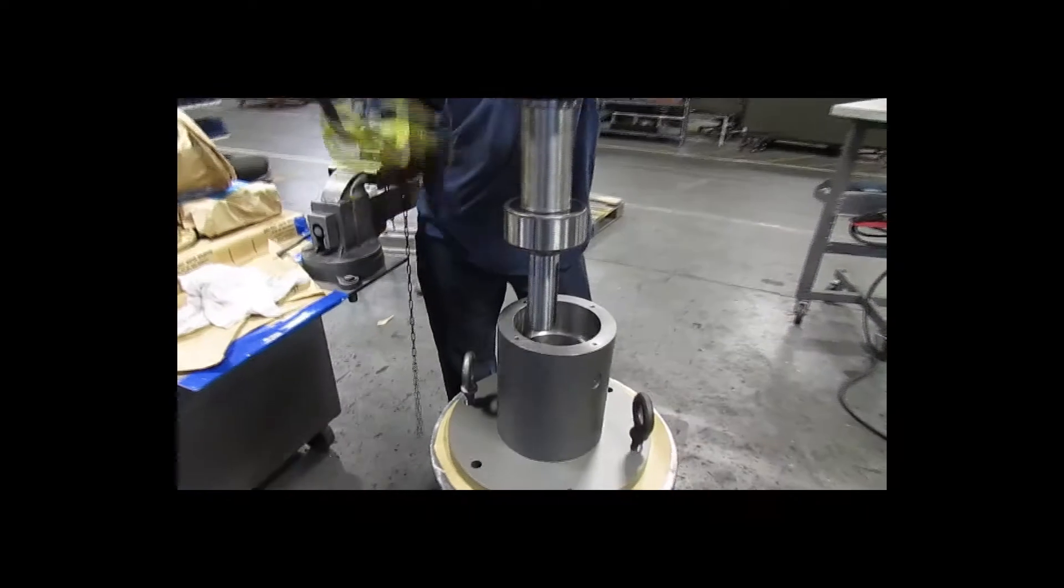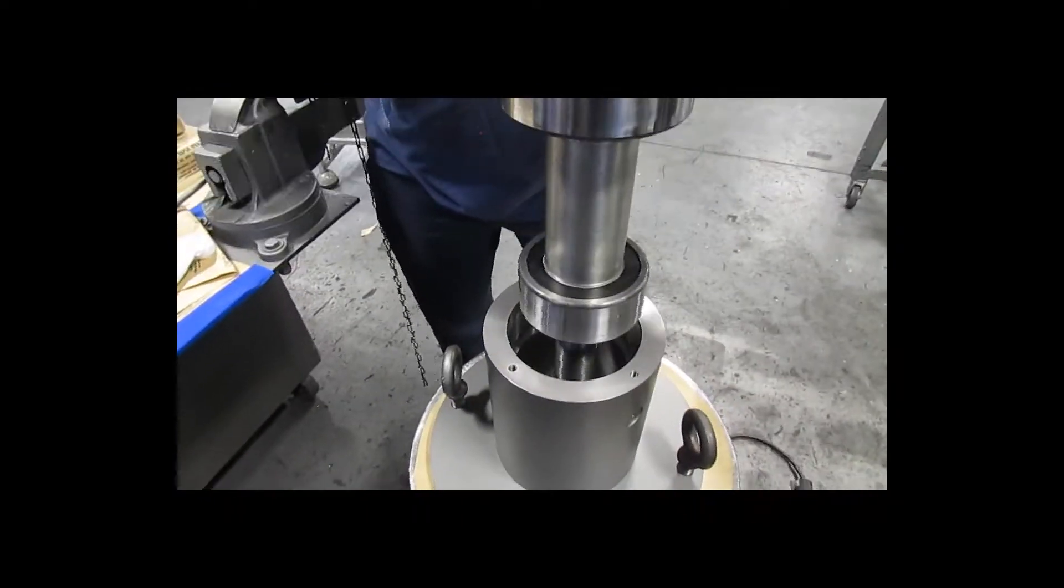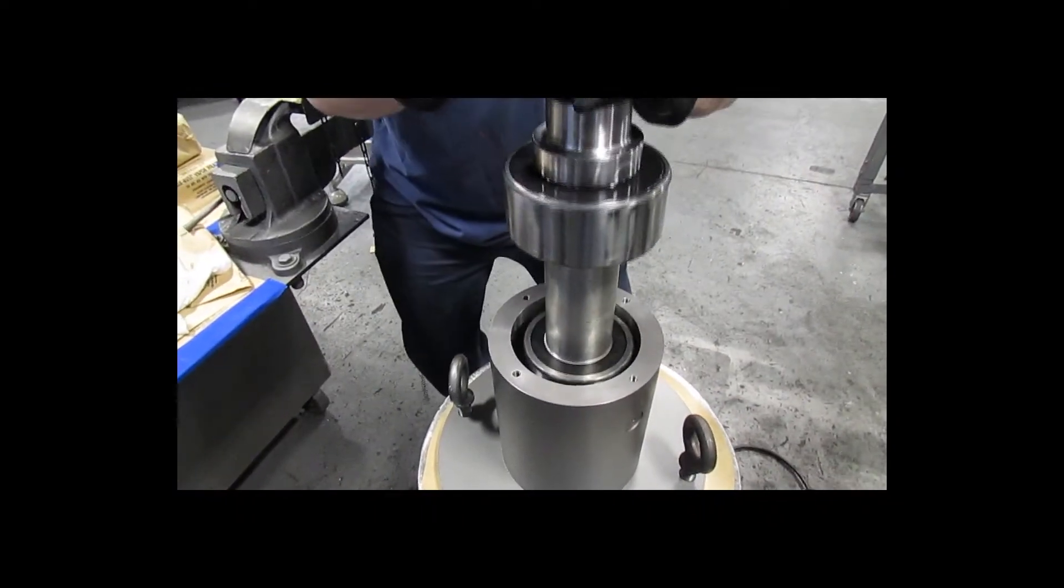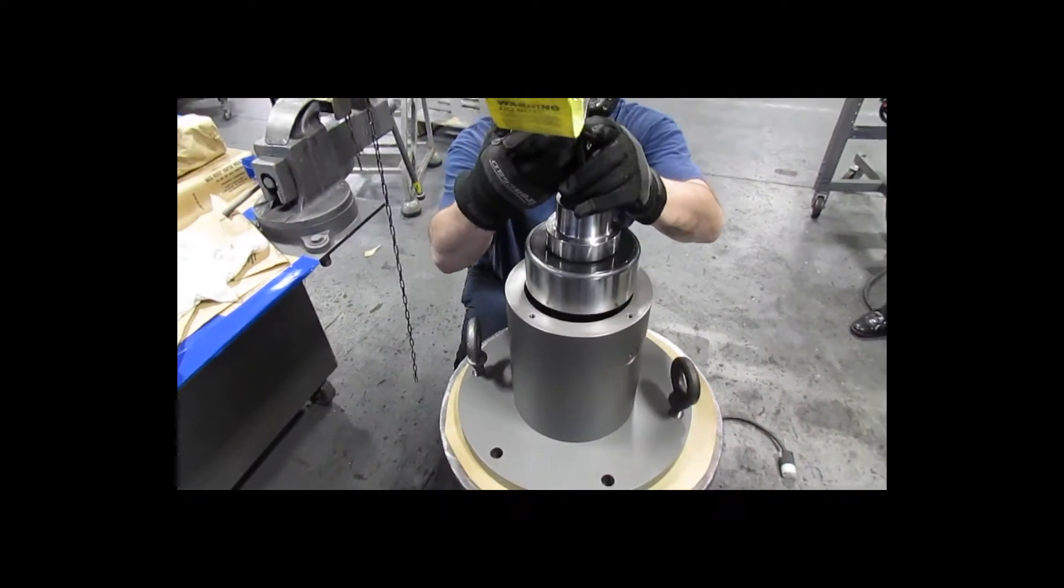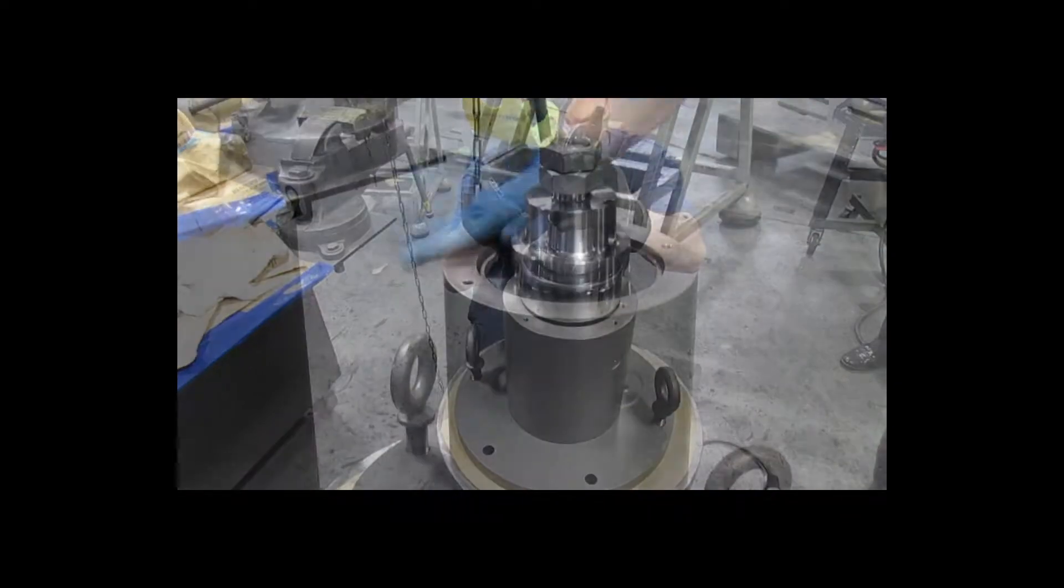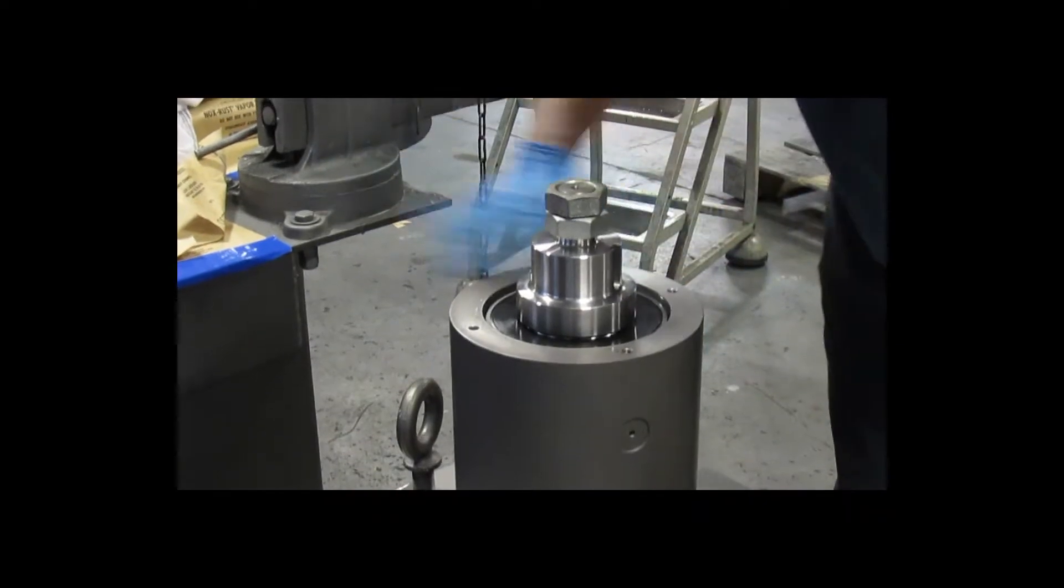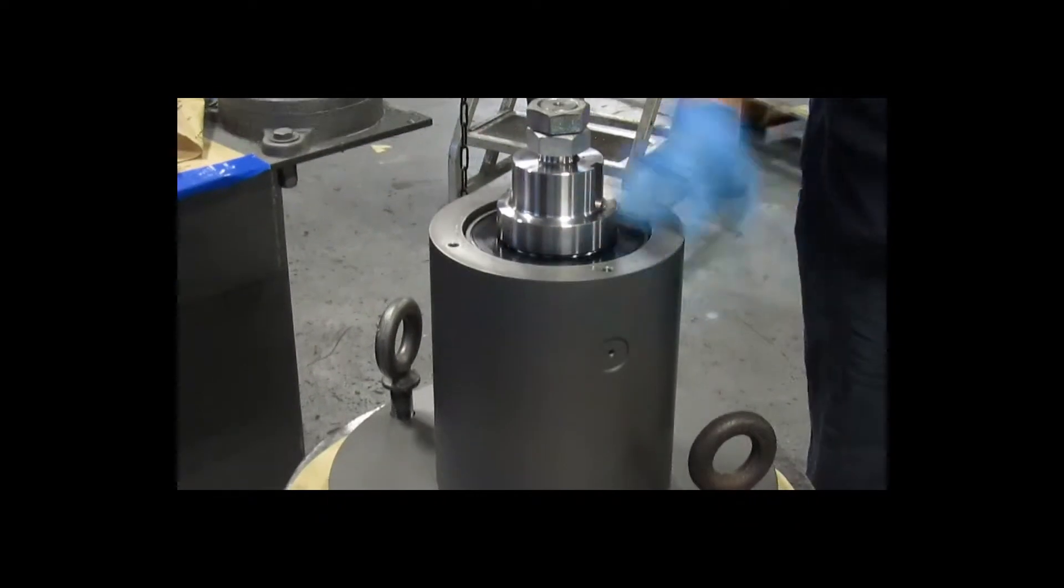It's also important to keep the shaft straight so that the bearings do not get cocked once they enter the housing. If the shaft is straight, the bearing should slide in without too much resistance, after which time the upper rotor bearing seats against the shoulder.